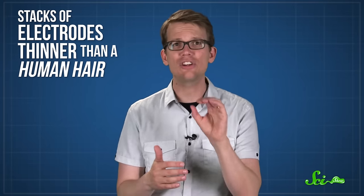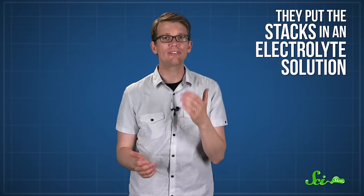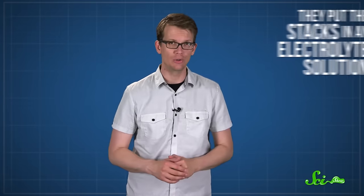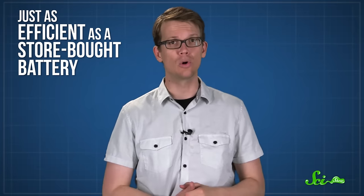So engineers used that special ink in a custom-made 3D printer, which printed stacks of electrodes, each thinner than a human hair. Then, they put the stacks in an electrolyte solution to provide a medium for the current to pass through. And that was it. They had a very tiny battery that turned out to be just as efficient as the kind you can buy at the store. These new nanoprinted batteries may soon wind up in microscopic technologies like miniature cameras, tiny medical implants, and adorable little nanobots.